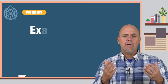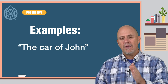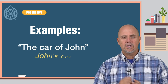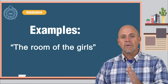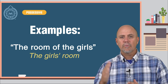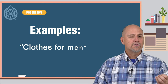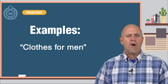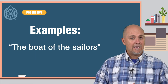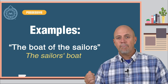Here are some more examples. The car of John is John's car. The room of the girls is the girls' room. Clothes for men are men's clothes. The boat of the sailors — the sailors' boat.